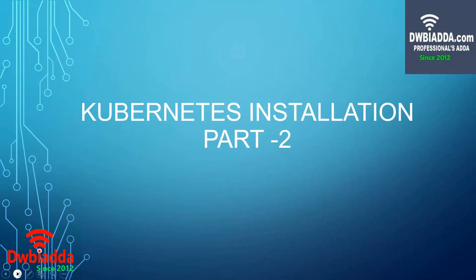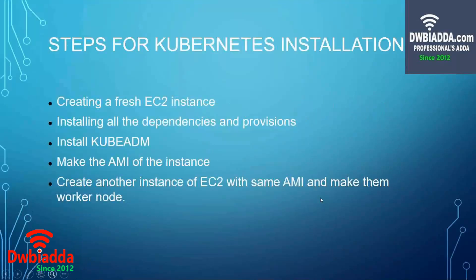In this video, what we will be doing is installing kubeadm and initiating it, also making an AMI image of the instance — which is Amazon Machine Image — and using that machine image we will be launching two EC2 instances.